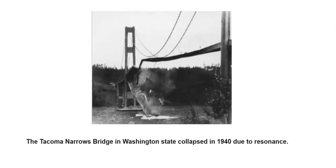The Tacoma-Narrows Bridge in Washington state collapsed in 1940 due to resonance. Forces were applied at a frequency that matched the natural frequency of the bridge and eventually caused its failure. So if you know the natural frequency of a structure, you can design it in a manner to prevent such incidents.